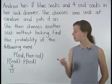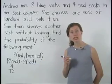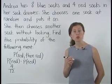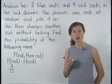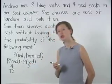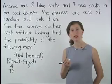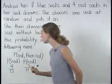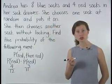Now, to find the probability that Andrea will then choose another red sock, remember that one red sock has already been taken from the drawer, so now there are only three red socks in the drawer, giving three favorable outcomes. And now there are only eleven socks in the drawer. So the probability that Andrea will then choose a red sock is three out of eleven.